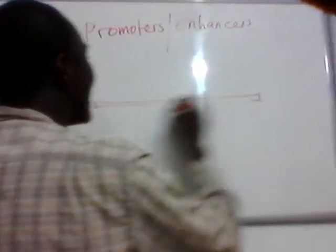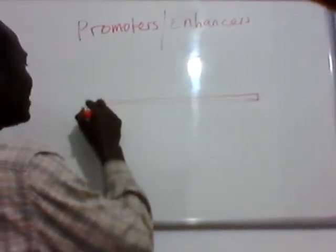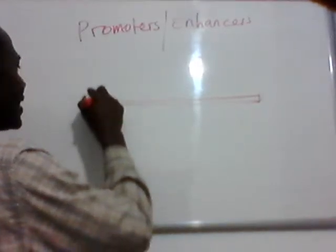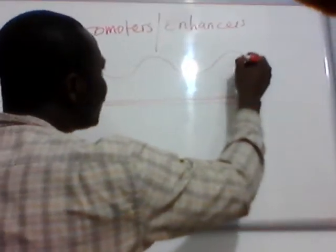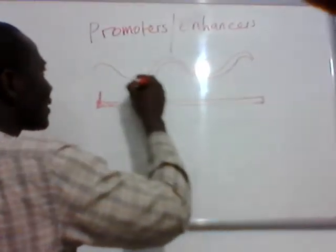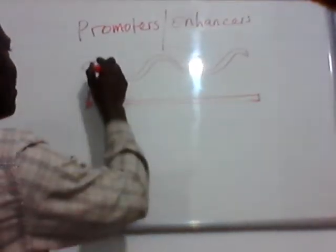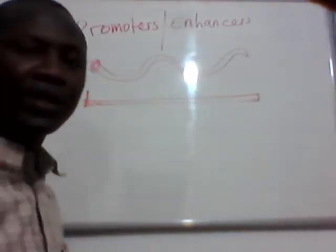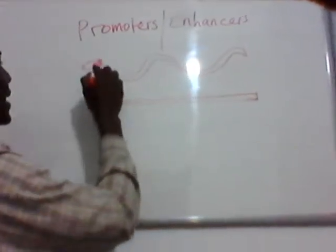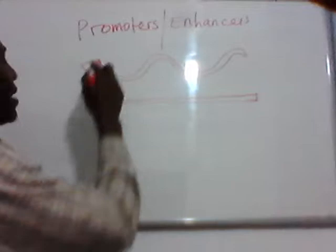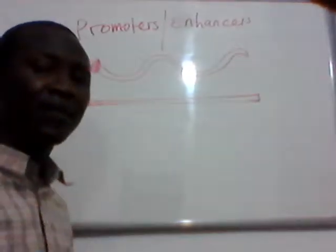Suppose this is your gene of interest that you are going to study, and gene regulation will start here — transcription will start here. Before transcription, your gene will be folded. When you have a folded gene like this, your promoter will come and bind here, in combination with certain transcription factors.